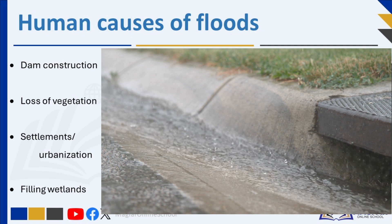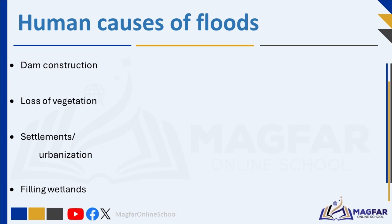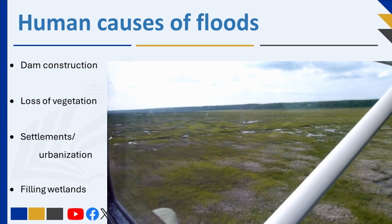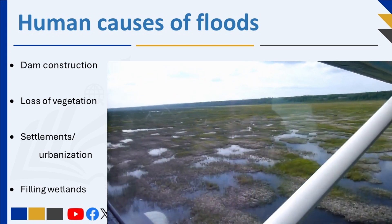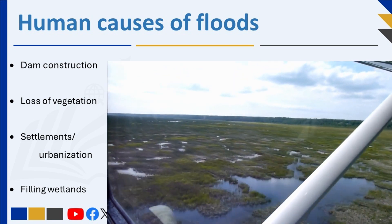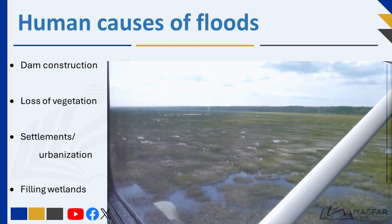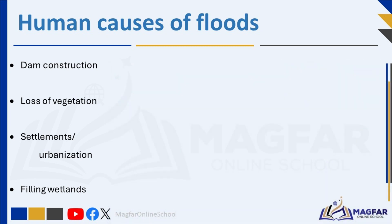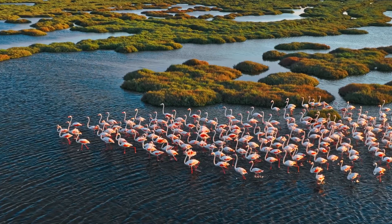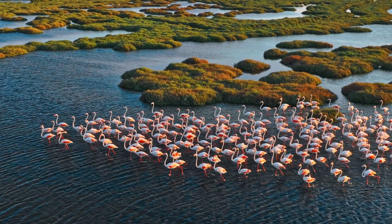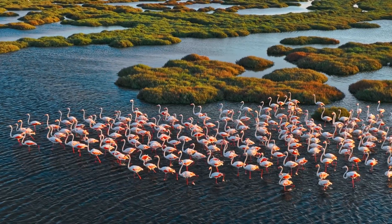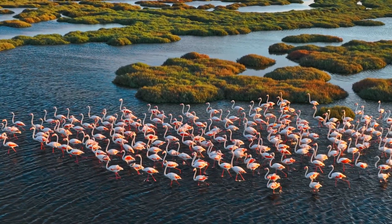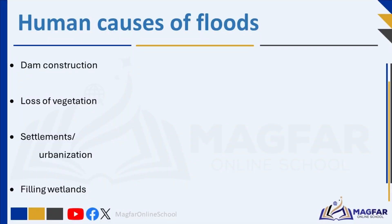Filling wetlands: people sometimes remove or fill in wetlands and lakes. A wetland is an area of land where water covers the soil either seasonally or permanently. Wetlands act like natural water stores. When they are destroyed, there is more water in the rivers because it is not being stored in the lakes or wetlands. This can also result in flooding.